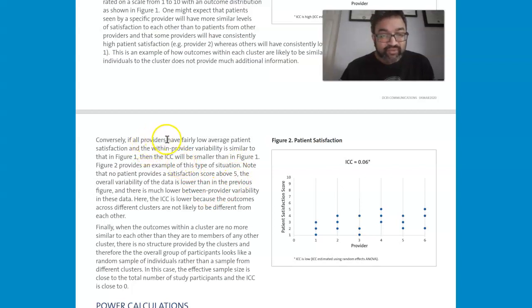However, if all providers have fairly low average patient satisfaction, and the within provider variability is similar to that in figure one, then the ICC will be smaller than in figure one. So figure two is an example of this type of situation. So this is a byproduct of the satisfaction score level.